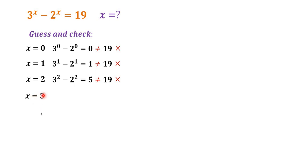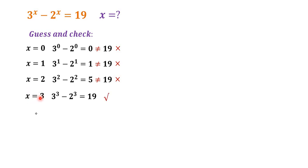Then we try x is equal to 3: we have 3 to the power of 3 minus 2 to the power of 3 is equal to 19. So this time we are lucky and we get one value — x is equal to 3 works for this equation, and x is equal to 3 is one solution.